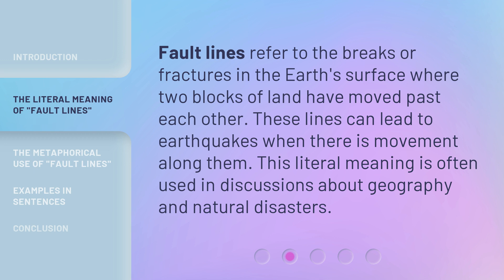Fault lines refer to the breaks or fractures in the earth's surface where two blocks of land have moved past each other. These lines can lead to earthquakes when there is movement along them. This literal meaning is often used in discussions about geography and natural disasters.